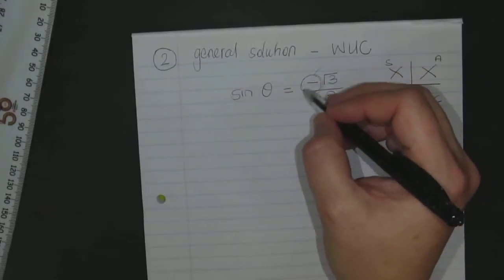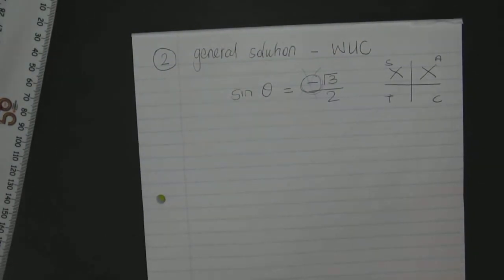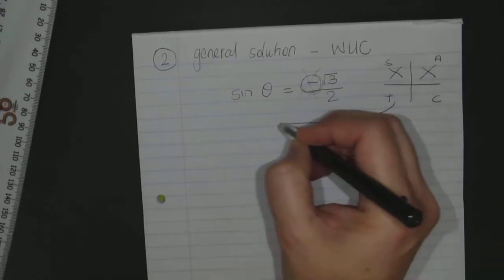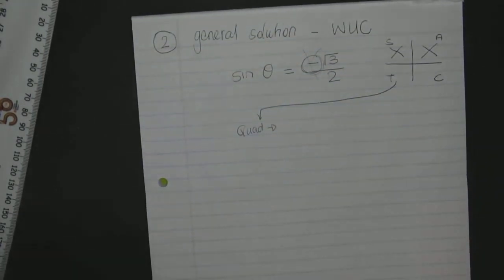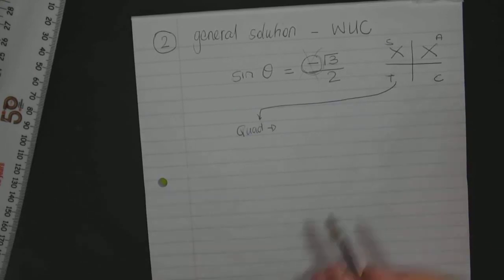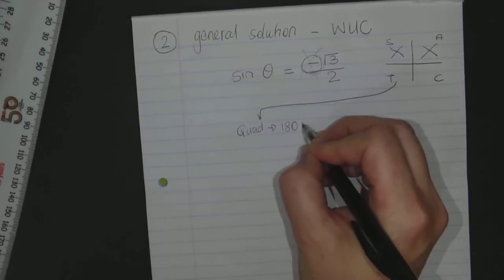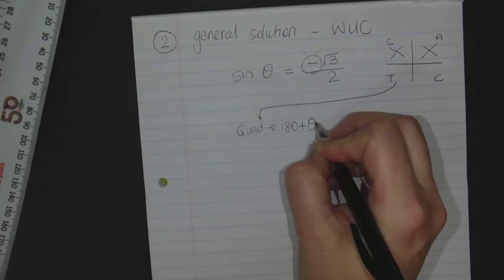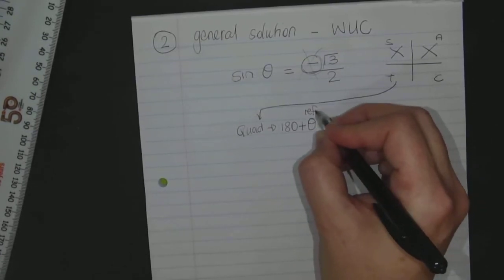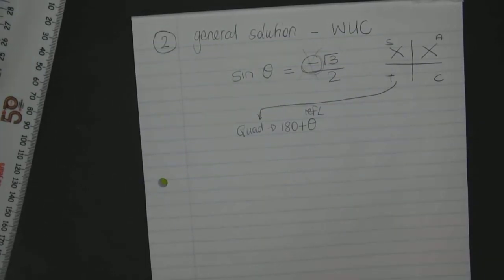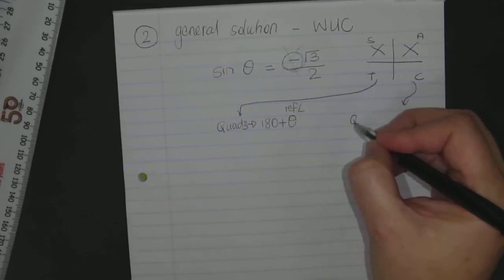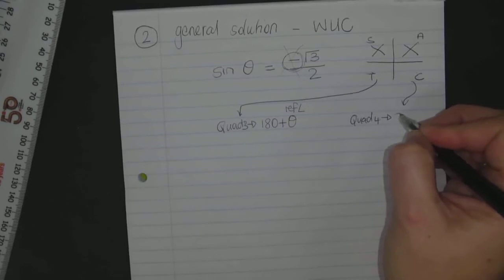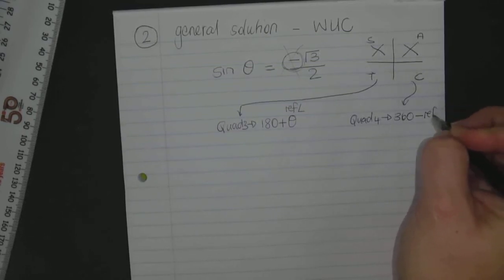Then that negative will fall away. I won't be working with it at all. In quadrant 3, what do you know about the reduction formula in quadrant 3? It is 180 plus theta. Now theta refers, in this case, your reference angle. So quadrant 3 is that. What do I know about quadrant 4? Quadrant 4 is 360 minus my reference angle.